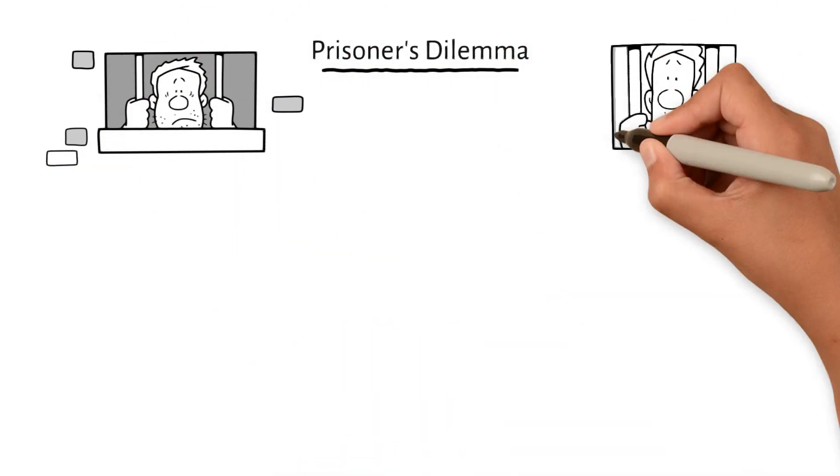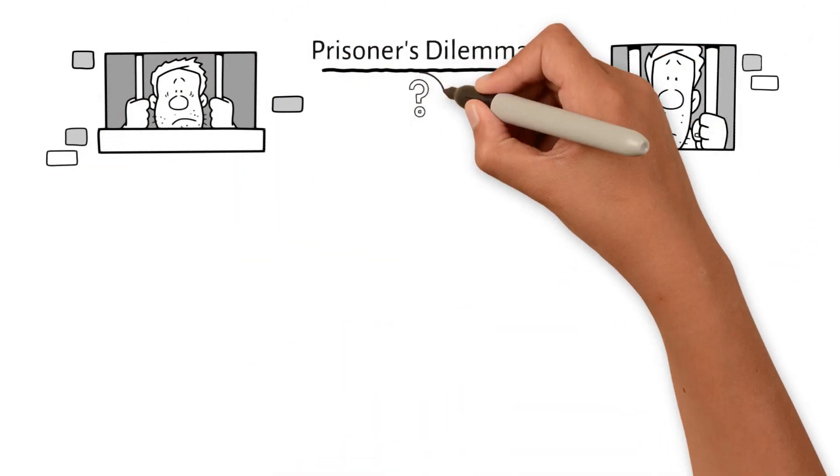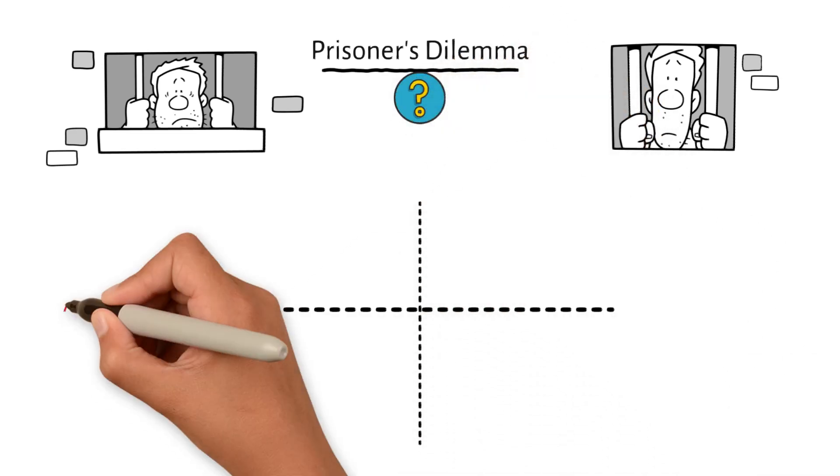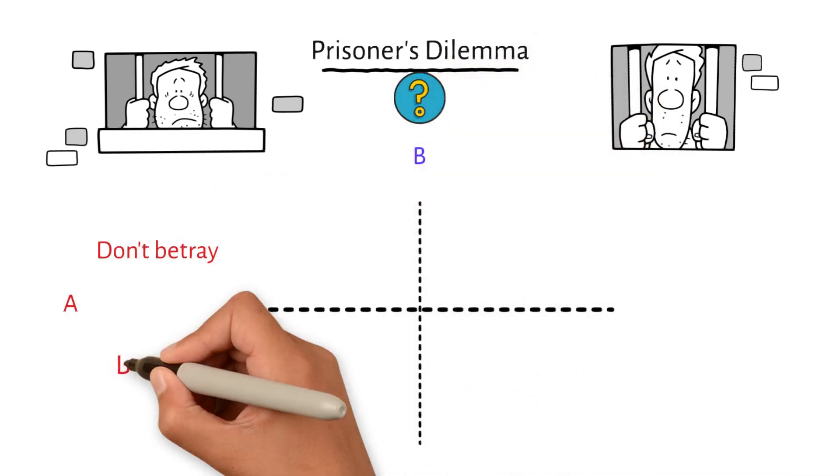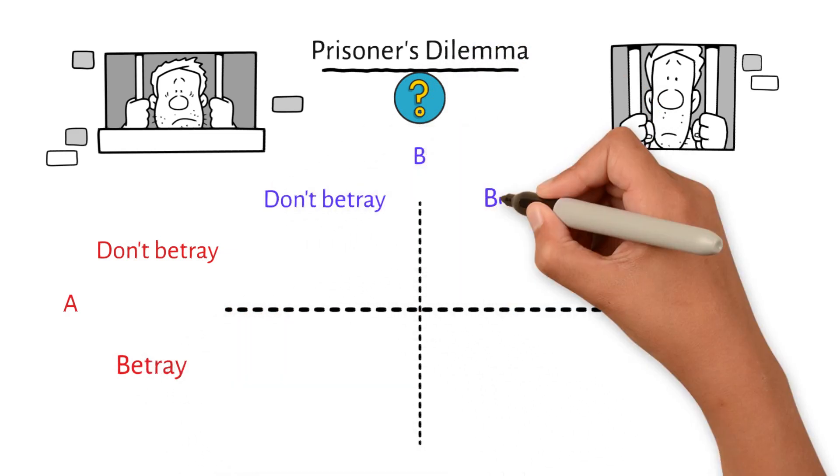Imagine that two people are in jail at the same time for the same crime. Police don't know who did the crime or who helped make it happen, though. Each person who is being held has several choices.